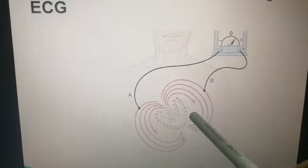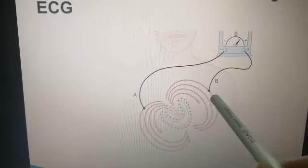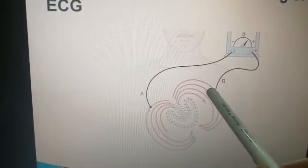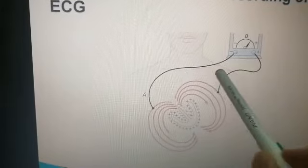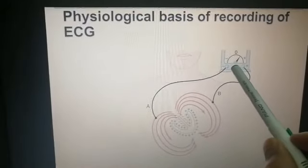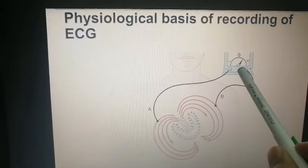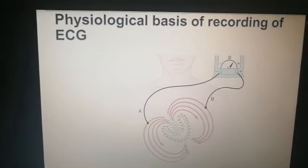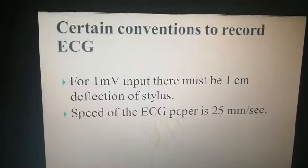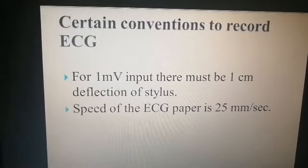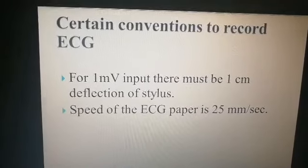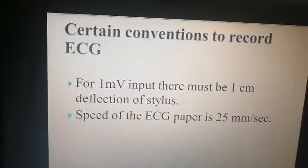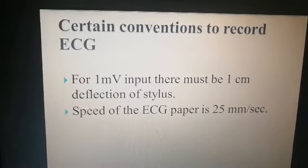The current in the heart comes to the surface of the chest, and from the chest the electrodes are connected to a voltmeter to determine the strength of that electric current. Certain conventions apply to recording ECG: for 1 millivolt input there must be 1 centimeter deflection of the stylus, and the speed of the ECG paper is 25 millimeters per second.